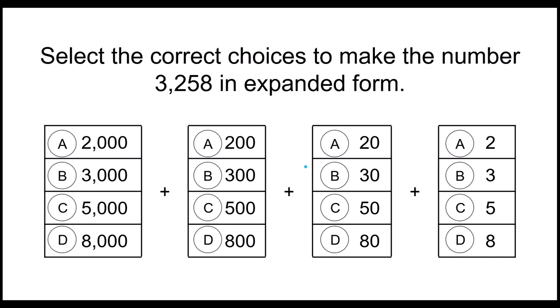So we've got select the correct choices to make the number 3,258 in expanded form. Here we have 3,000 because it's 3 in the thousands place. Now the 2 has to be in the hundreds place. And then 58, 50 and 8. You did it. Great job.